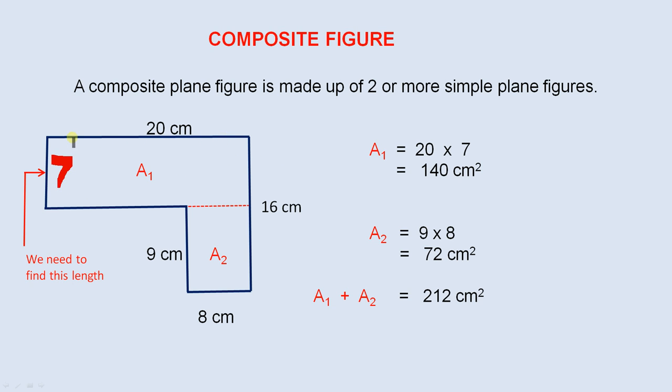So we have the measurements of that rectangle, 20 centimeters by 7 centimeters. Now the second rectangle, which is A2, that's quite simple because we already have 9 centimeters and 8 centimeters. So here are our two rectangles.